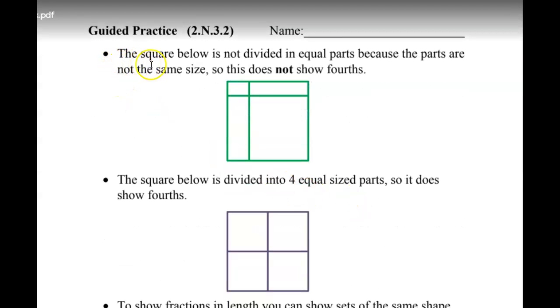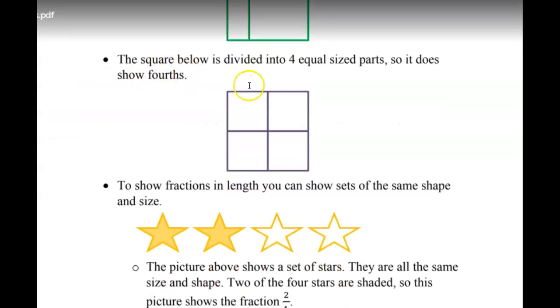If you look at these, the square below is not divided into equal parts because the parts are not the same size. So this does not show fourths. It has to be equal. See how this one's real tiny and this one's real big? Those are not equal parts. This square, however, is divided into equal parts. All of these look to be about the same size, so it is divided into fourths.